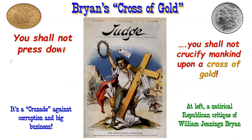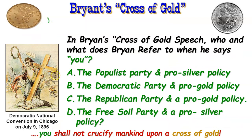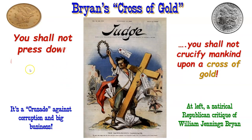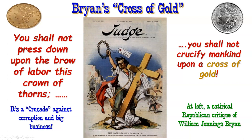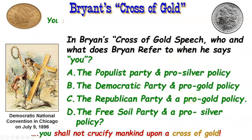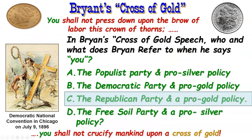One of Bryan's biggest speeches was known as the Cross of Gold speech — you will read it; make sure you understand it. He declared: 'You shall not press down upon the brow of labor a crown of thorns; you shall not crucify mankind on a cross of gold.' He was saying that the Republican Party's pro-gold policy was oppressive to common people, workers, and the everyday person.